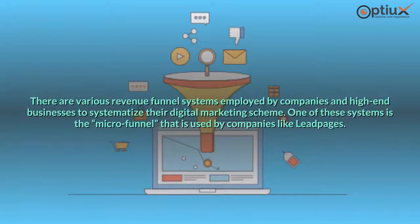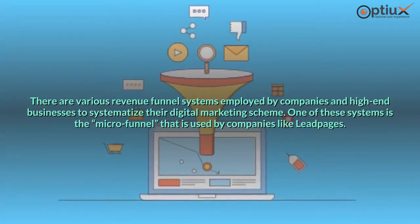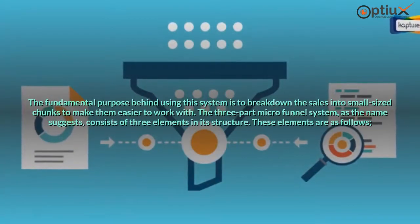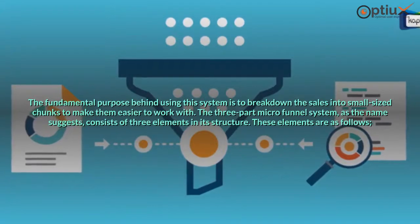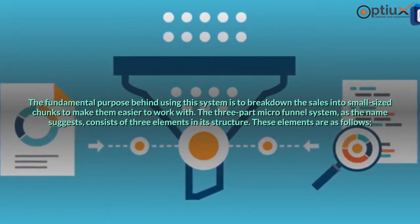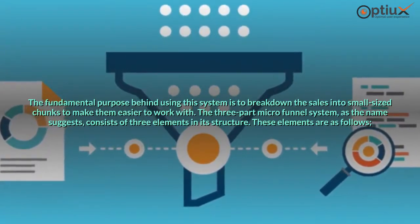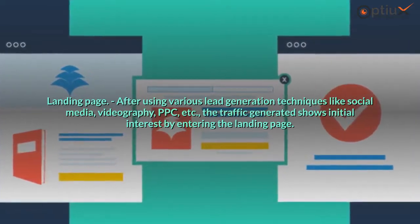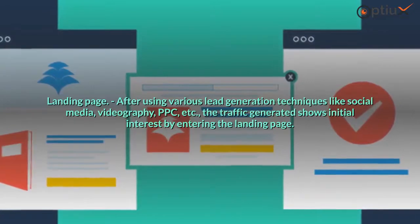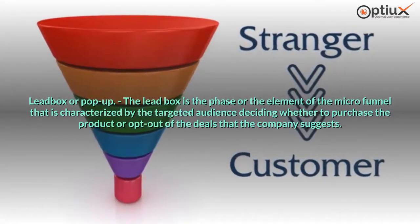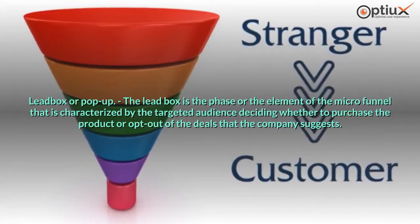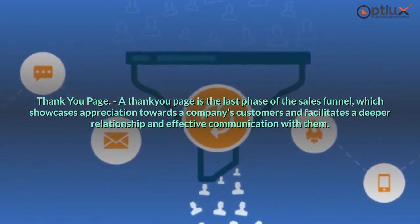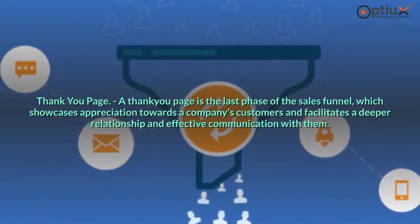3-Part Micro Funnel. There are various revenue funnel systems employed by companies to systematize their digital marketing scheme. One of these systems is the Micro Funnel, used by companies like Leadpages. The fundamental purpose is to break down the sales into small-sized chunks to make them easier to work with. The three-part Micro Funnel consists of three elements: the Landing Page, where traffic generated from lead generation techniques shows initial interest; the Lead Box or pop-up, where the targeted audience decides whether to purchase the product or opt out; and the Thank You Page, which showcases appreciation towards customers and facilitates a deeper relationship and effective communication with them.